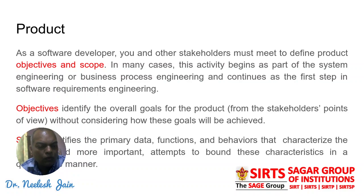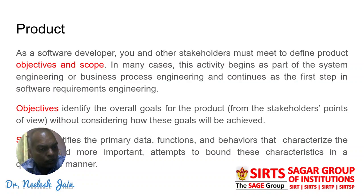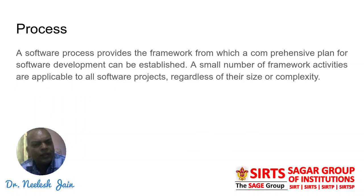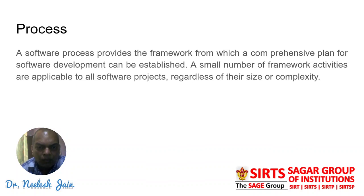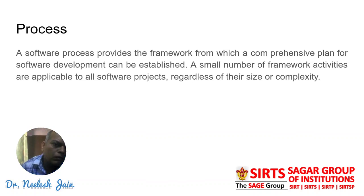If you want to make a product or you are working on a project, then these two things — objective and scope — should be fulfilled. The third P that comes here is the Process. A software process provides the framework from which a comprehensive plan for software development can be established. A small number of framework activities are applicable to all software projects, regardless of their size and complexity. We will elaborate on the process further in the next session.